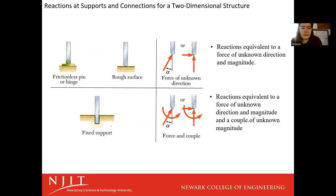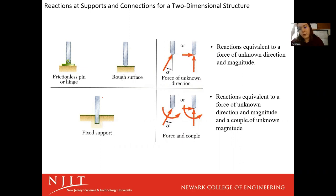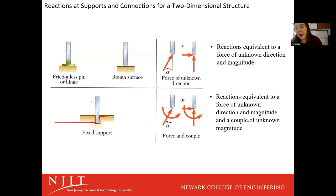A fixed support is like — a lot of times in construction environments, you'll have a vat of cement that you put your beams into to help make sure they are as secure as possible. You're giving it a strong structure around it, and it's constraining motion in every way — we can't slide in any direction, and we can't rotate. There's no freedom of rotation at that joint itself.